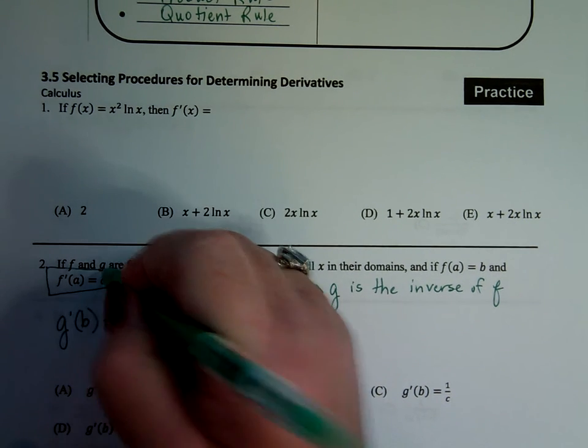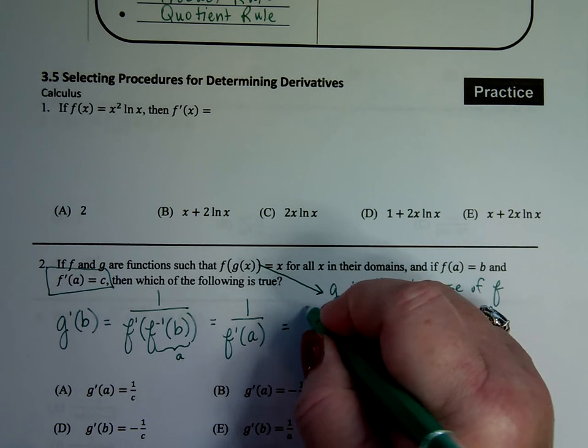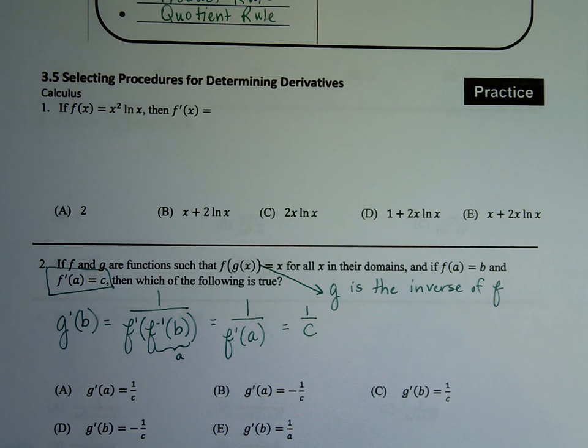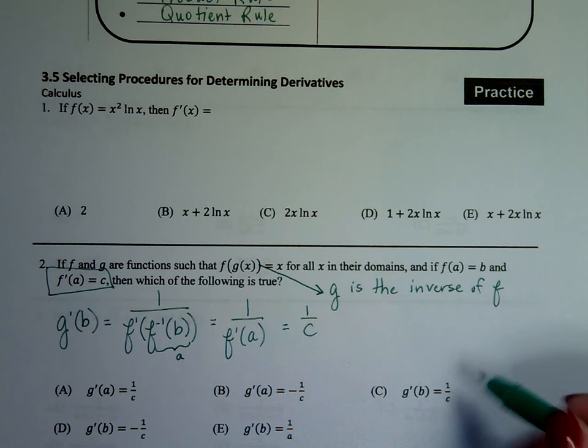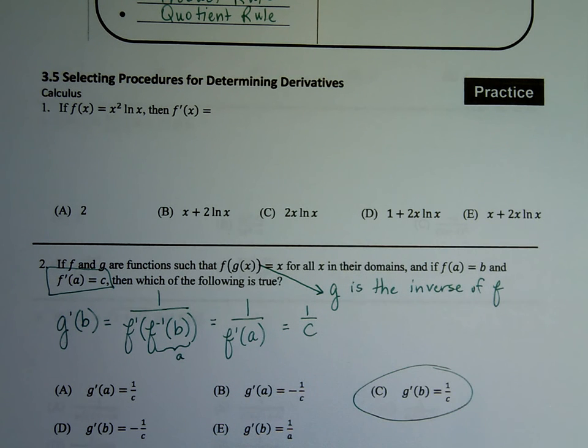Well, back over here, you know that f prime of a is c, so your answer is 1 over c. g prime of b is equal to 1 over c, and that is your answer c. So if you got lost in all of that craziness, just take it back to your fundamentals. Take it back to your basic equation for your rules for inverses, and there you go.